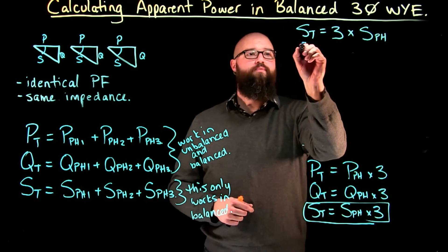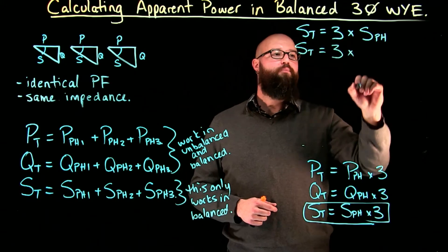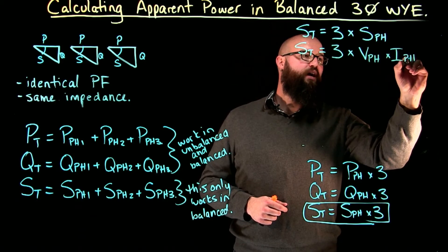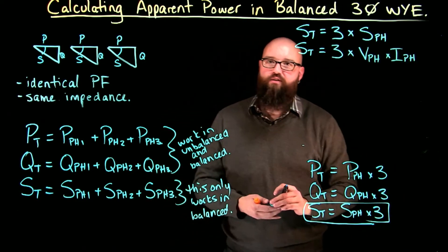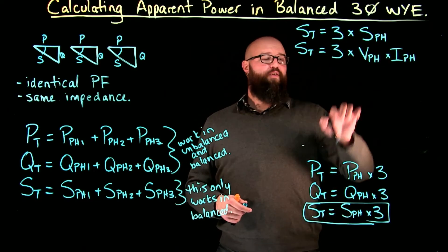We can also say that S total equals three times voltage of that phase times the current of that phase. Because if I want to find the apparent power per phase, I need the phase voltage and phase current. V times A equals VA.